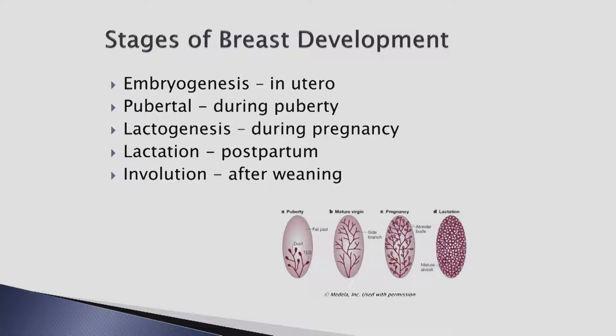Lactogenesis occurs during pregnancy, with ductal and lobular development accelerated with the influence from hormones excreted during pregnancy. The final stages of breast development and milk production occur during lactation. Involution occurs when lactation is discontinued and prolactin levels drop.